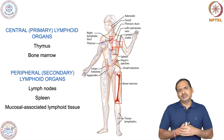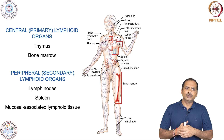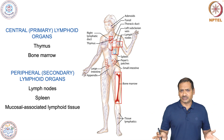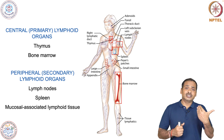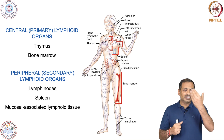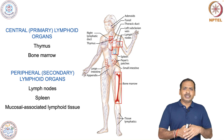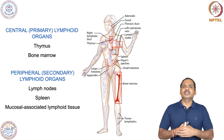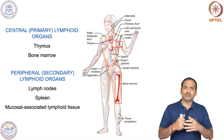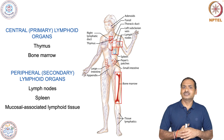There is another lymphoid organ called the mucosal associated lymphoid tissue, or MALT, which is scattered throughout the mucosal surfaces. It includes the gut, urogenital tract, and nasal tract. This was an overview of lymphoid organs. In the next session, we will discuss all these organs in great detail, including their structure, composition, and how they play an important role in defense. Thank you very much.